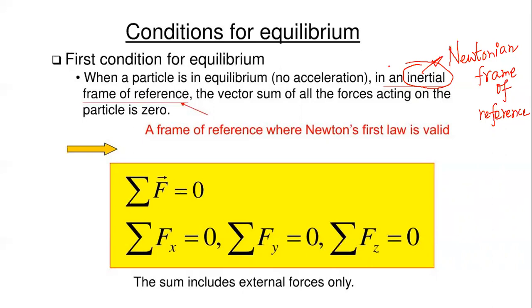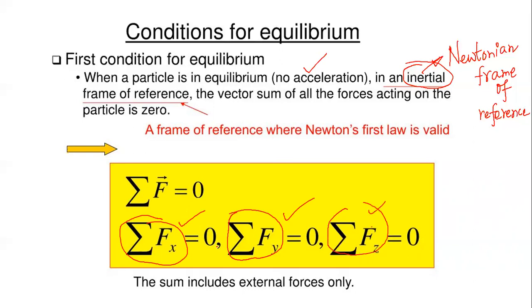When a particle is in equilibrium or no-acceleration mode in an inertial frame of reference, the vector sum of all forces acting on the particle is zero. We have seen that sigma Fx = 0 establishes force equilibrium along x. Similarly for a 3D object, equilibrium along y and z is also zero, so the net resultant force FR is zero.